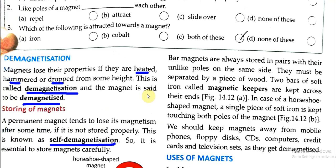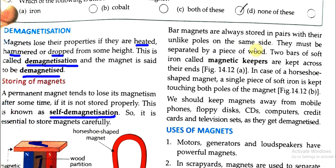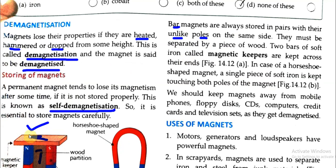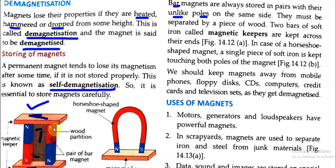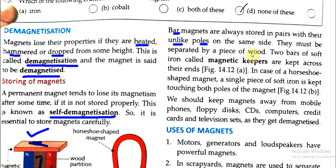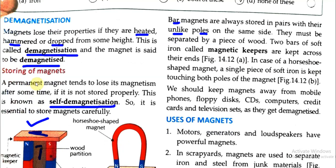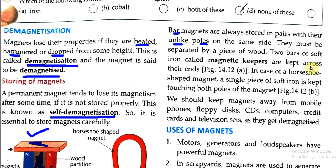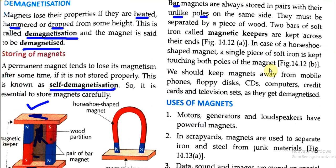Bar magnets are always stored in pairs with their unlike poles on the same side. The north pole and south pole must be placed accordingly, separated by a piece of wood. Two bars of soft iron called magnetic keepers are kept across their ends to preserve the magnetism.